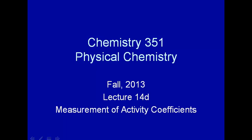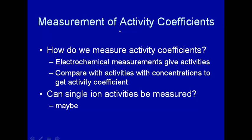We've talked a lot about activities and how they relate to concentration — namely, the activity would be an activity coefficient times concentration. Let's consider now how one actually measures activity coefficients. They're essentially a correction factor so that when you calculate thermodynamic quantities, you're using concentration, but the concentration is not as active as before, so you put in this fudge factor, the activity coefficient, to correct the concentrations to get the right thermodynamic properties. But how do we actually measure those?